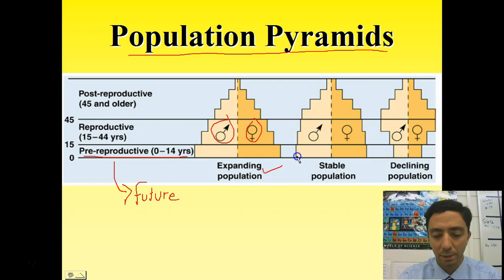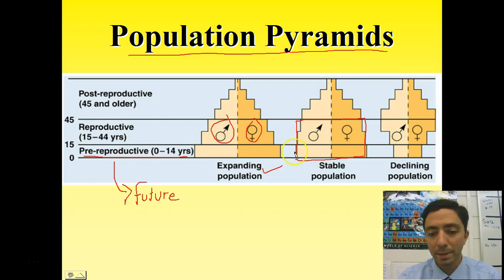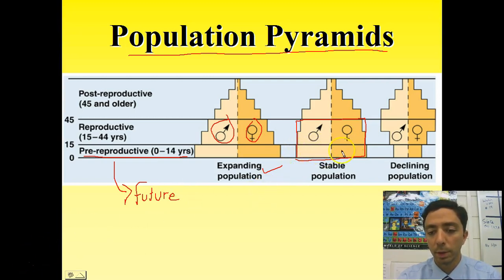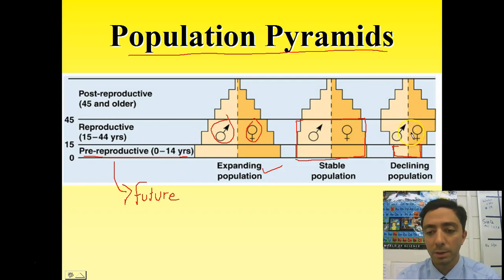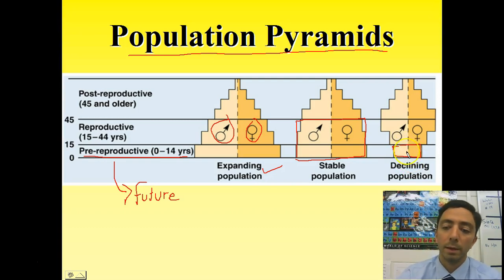If you have a relatively square base, that's an indication of a stable population. We don't see a large increase in the pre-reproductive groups, so the width of the bars will be fairly consistent moving up in age. A pinched base — how narrow that set of bars is — tells us that in the future, when these individuals reach the reproductive years, there's going to be fewer parents, meaning fewer children. We would expect further shrinking bases and a declining population.